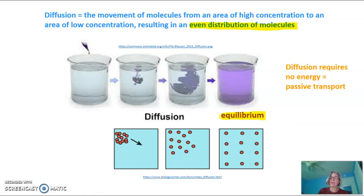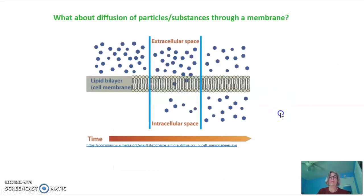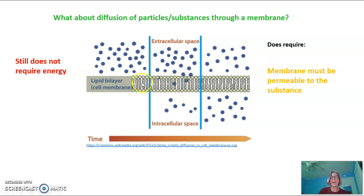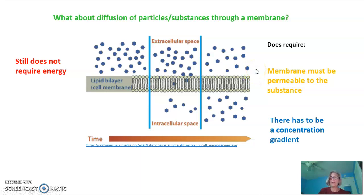Diffusion requires no energy at all — it's a passive form of transport. What about diffusion of substances across a membrane? It still doesn't require energy; it's still the movement of molecules from an area of high concentration towards an area of low concentration until there is an even distribution. But it does require a couple of things: the membrane must be permeable to that substance, and there must be what we call a concentration gradient.